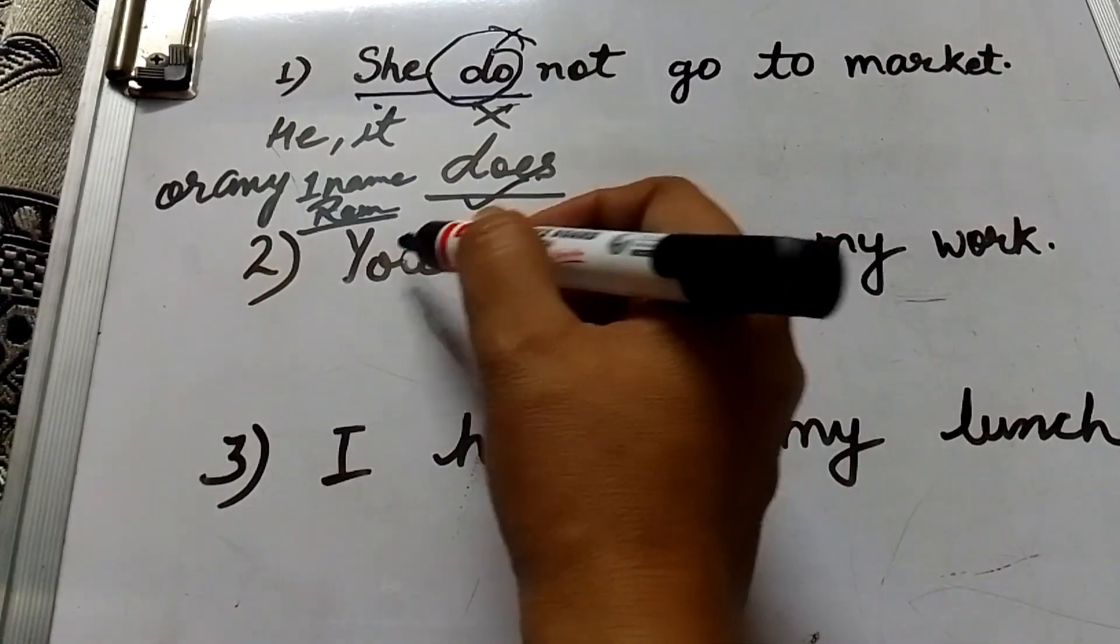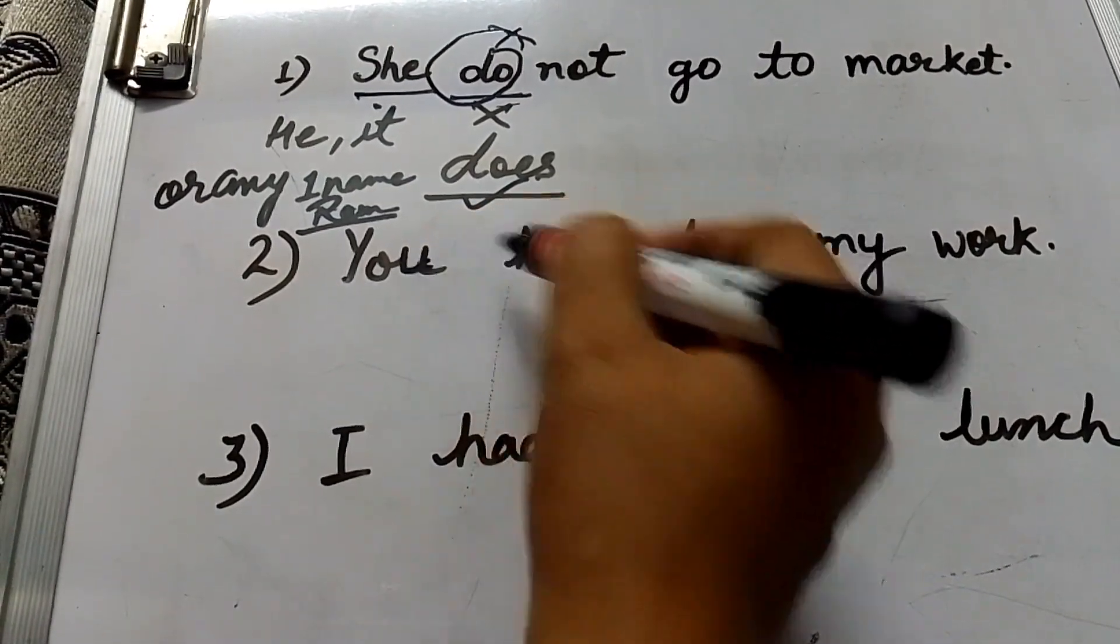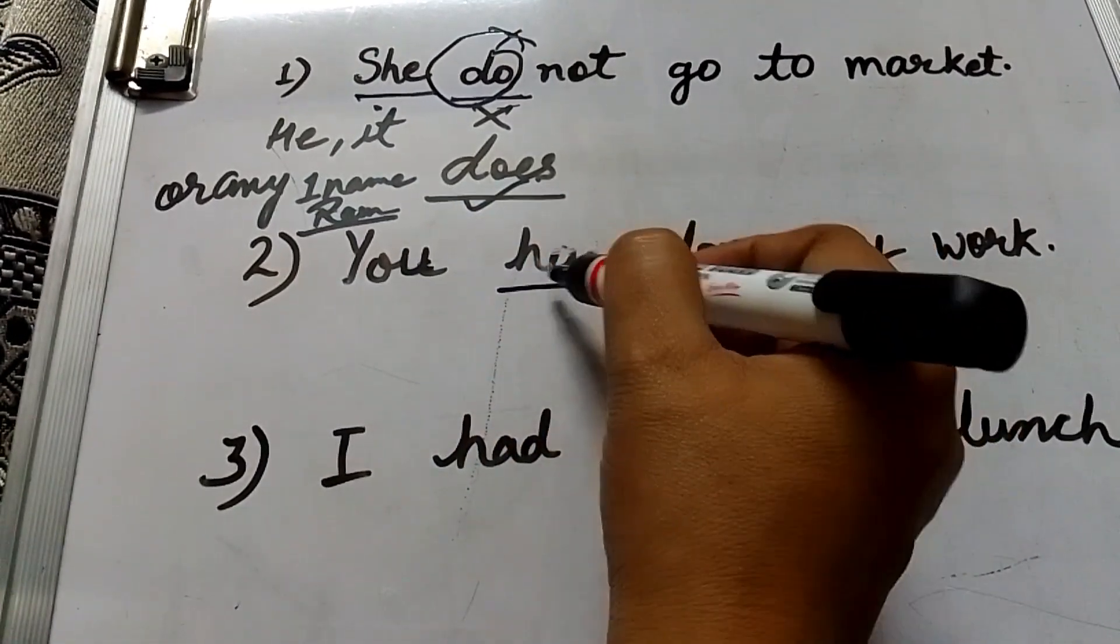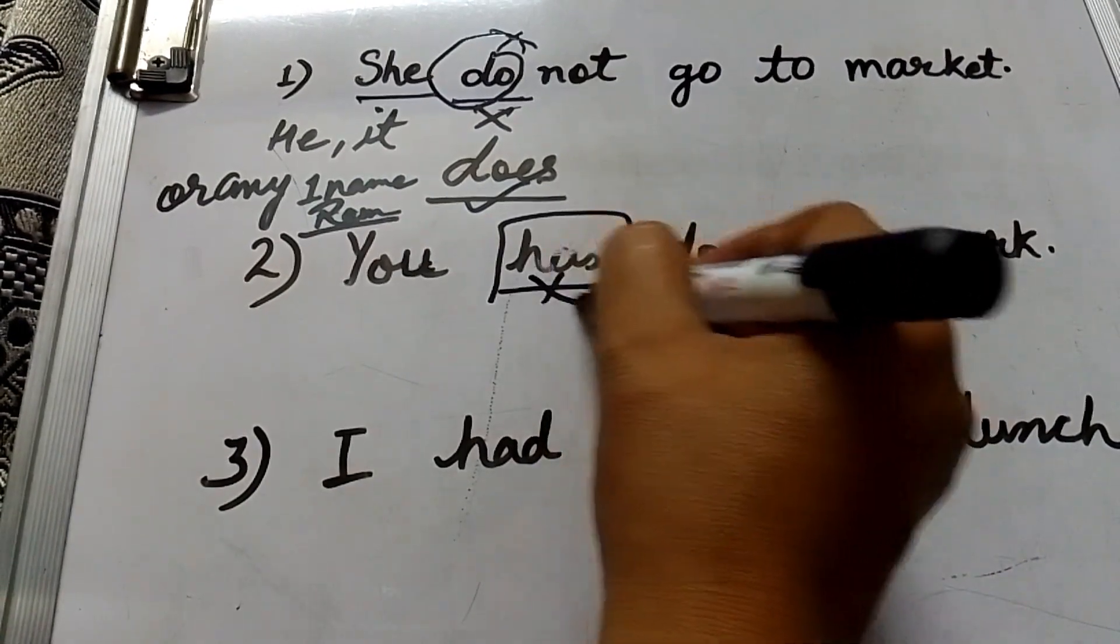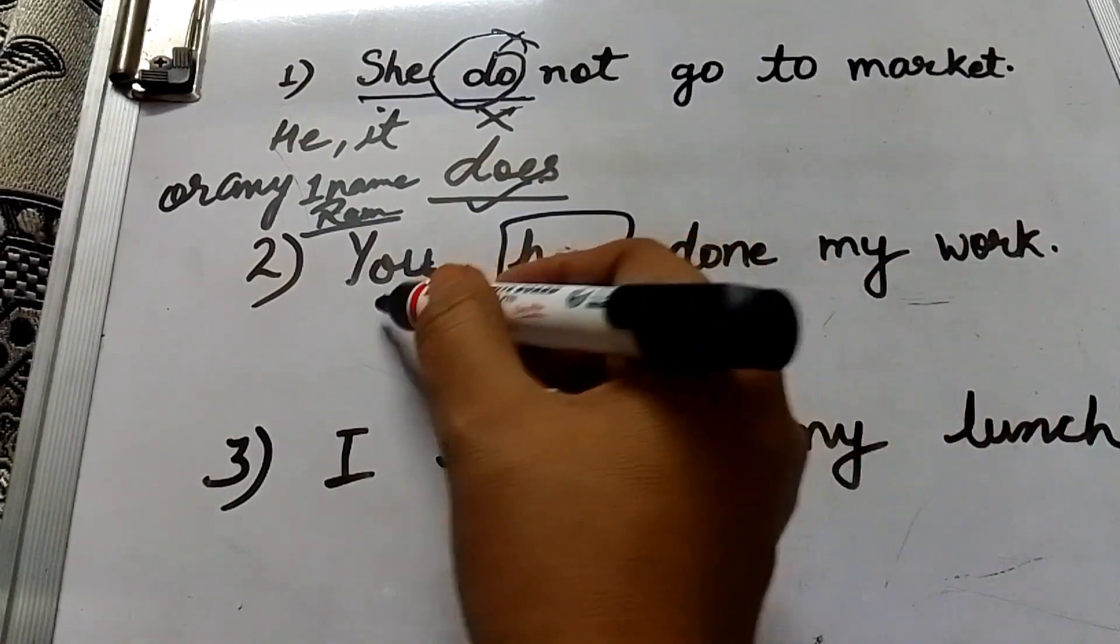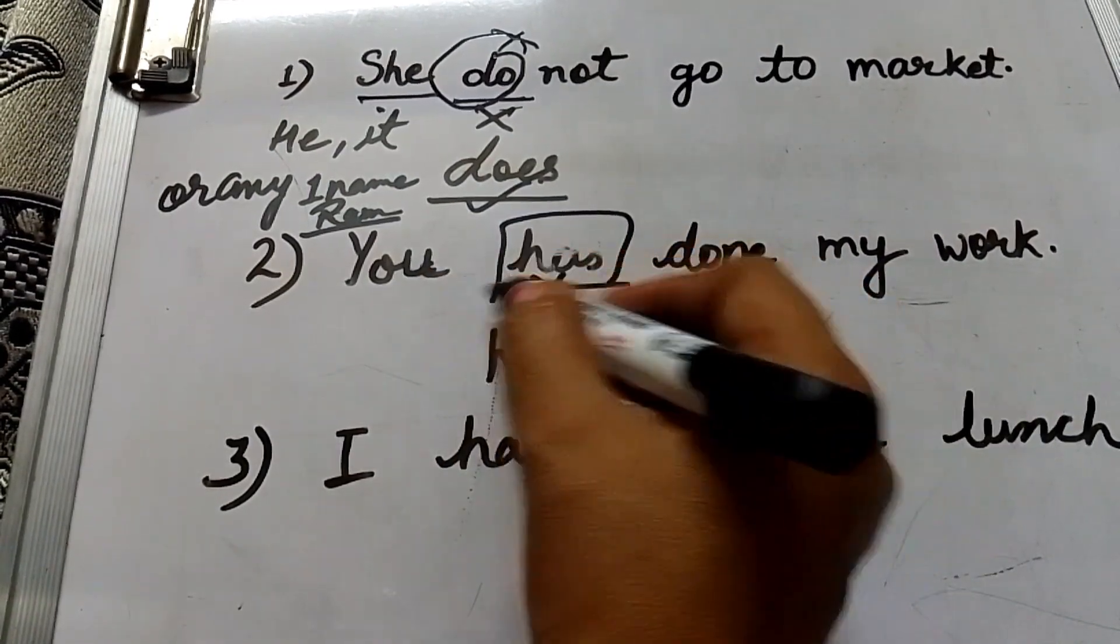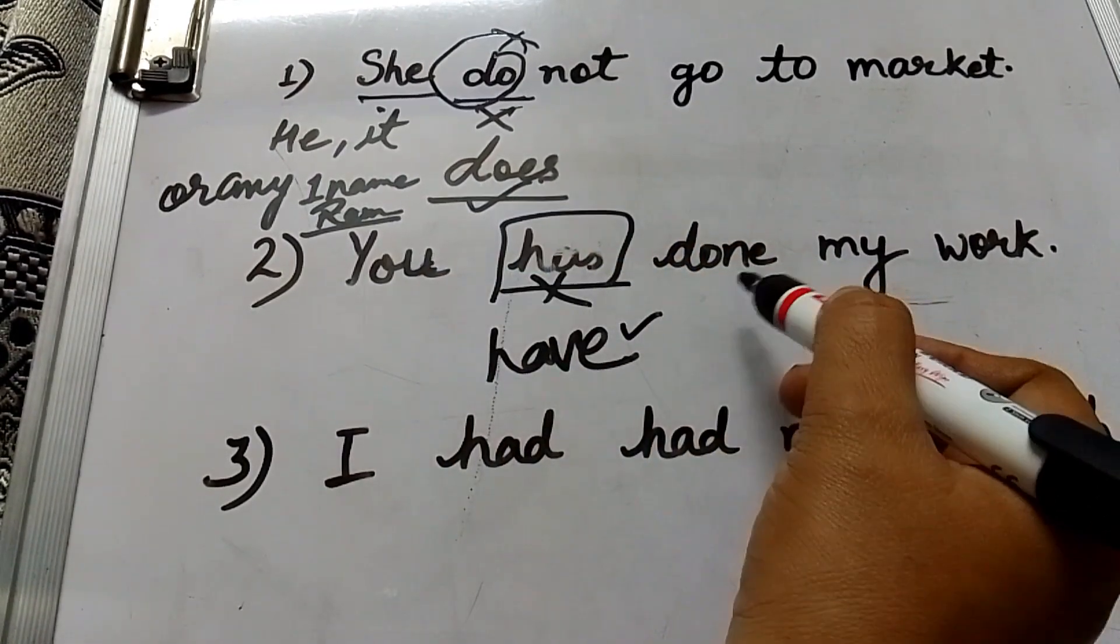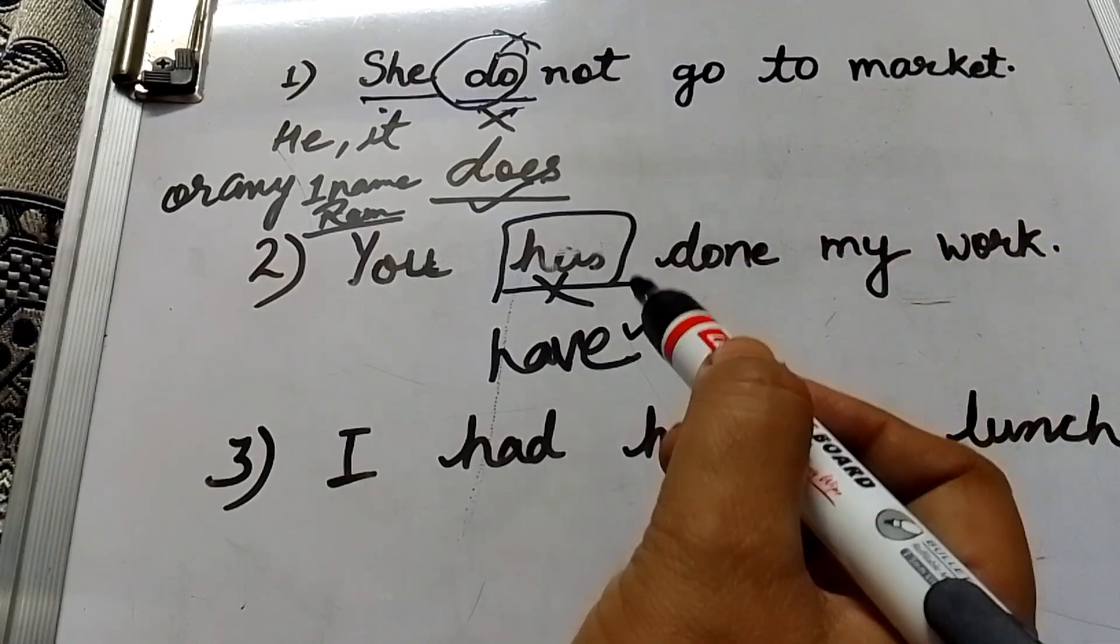Here you is the subject. With you we will not use has. Instead of has we will use have. Okay, you have done my work. This was the mistake in this sentence.